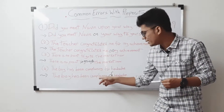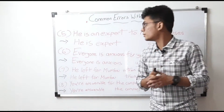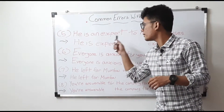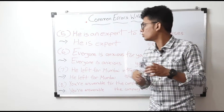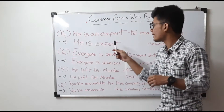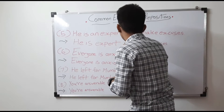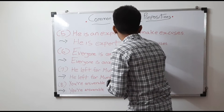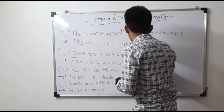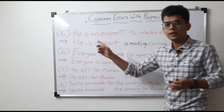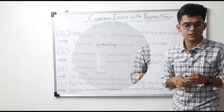Fifth sentence: 'He is an expert to make excuses.' That is wrong. The correct sentence will be: 'He is expert in making excuses.' — 'in making' is the correct form in this sentence.